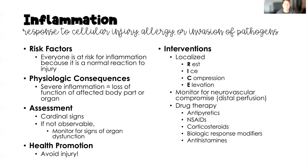We also want to monitor for neurovascular compromise distal to the injury — that means looking at distal perfusion. For example, if a client has a fractured femur, we monitor for blood flow past that injury. If blood flow cannot get past it, we have a perfusion compromise that could lead to compartment syndrome. A thorough neurovascular check distal to the injury is really important.